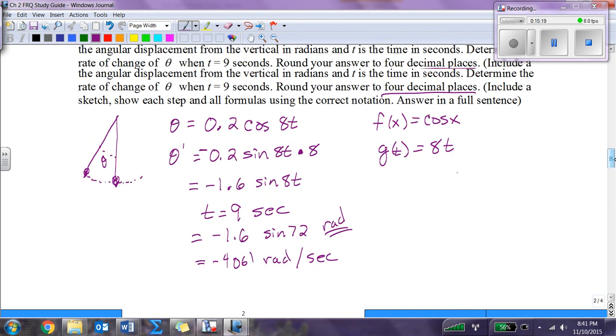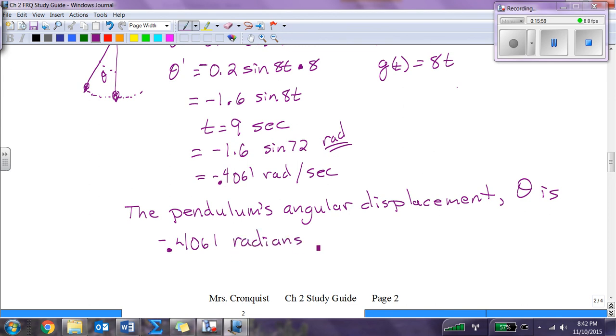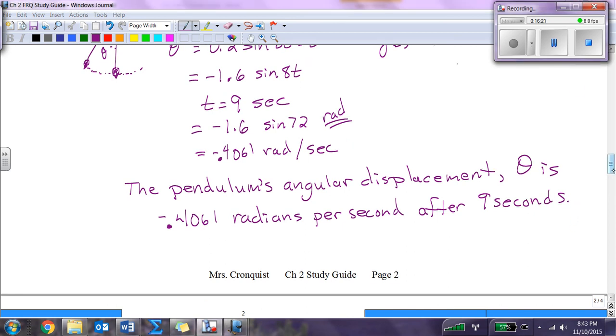What's the answer in a sentence? The pendulum's angular displacement theta is negative 0.4061 radians per second after 9 seconds. Now we're moving on.